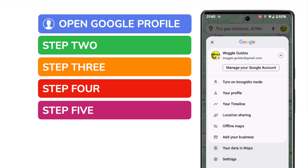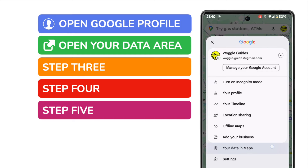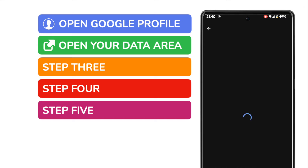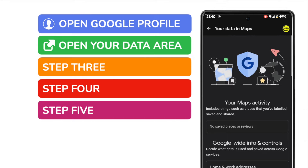On doing that, a number of options are displayed. We're interested however in opening the area called the Your Data in Maps section. Let's quickly tap once on that link to choose it.